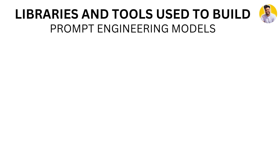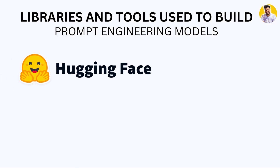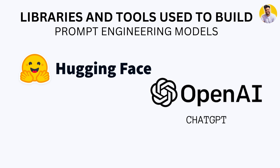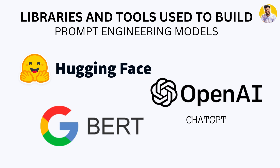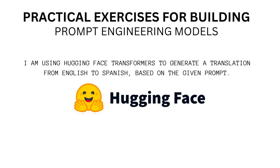There are many powerful tools and libraries available for building a prompt engineering model. Hugging Face Transformers is a very popular library for natural language processing tasks including building prompt engineering models. OpenAI Models are open source deep learning large language models that can be used for a variety of NLP tasks. Google BERT is a pre-trained large language model by Google that can be fine-tuned for a variety of NLP tasks. I've also provided practical exercises covering everything from data pre-processing to fine-tuning pre-trained large language models using tools like Hugging Face Transformers and Google BERT.